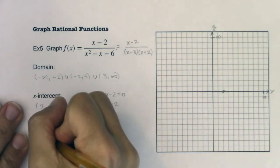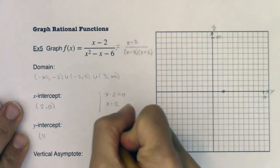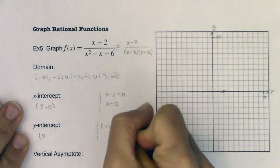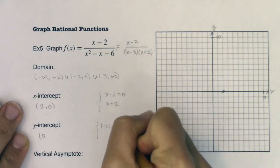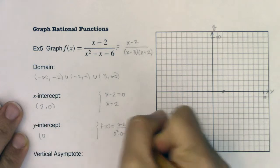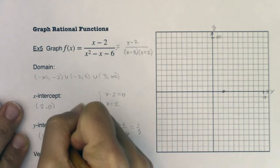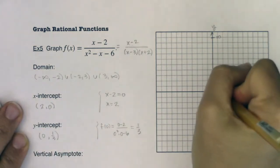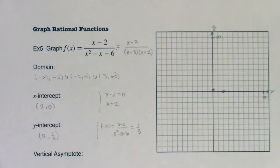For the y-intercept, let x=0. So f(0) = (0-2) / (0² - 0 - 6) = -2 / -6 = positive 1/3. So the y-intercept ordered pair is (0, 1/3). Let's go put that on the graph.